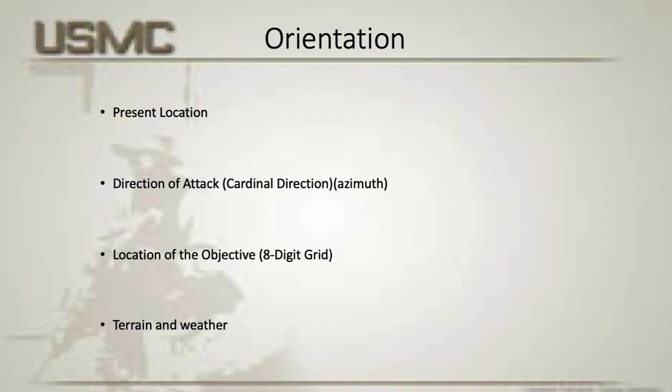The orientation paragraph starts off the order with a brief description of the terrain you will be operating in. Understanding the impact of terrain on the movement and mission will help you come up with a feasible solution. Prior to issuing an order, the unit leader orients his or her subordinates to the planned area of operation. Key aspects of the terrain, obstacles along the route, where we are currently located, and where we are going are all things to consider. When orienting your subordinates, keep the orientation simple and brief. The orientation should include present location, direction of attack, location of the objective, and terrain and weather.